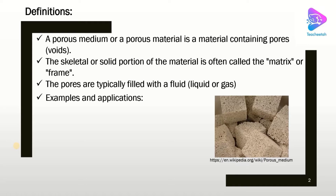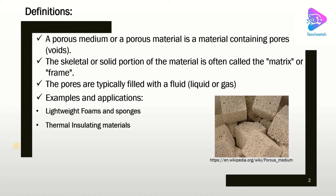The applications and examples of porous materials are very wide and we can find different porous structures around ourselves. For example, lightweight foams and sponges are types of porous materials. Thermal insulation materials and filtration materials could be porous structures. Also, new dielectric materials are based on porous structures. In fact, porous materials can be used for different applications.